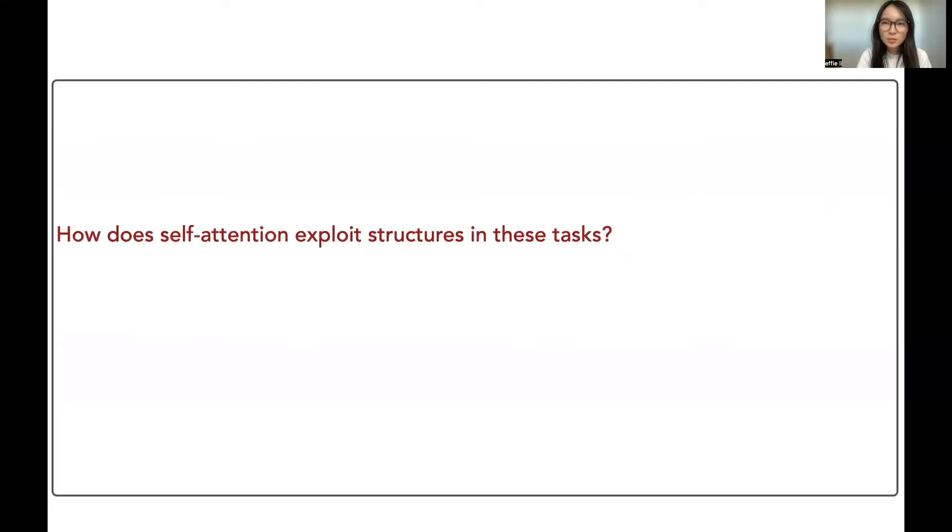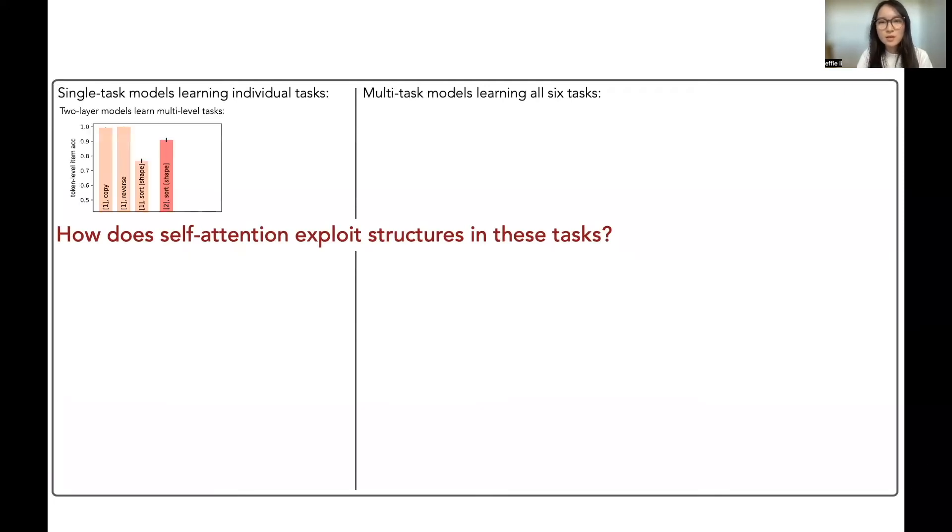To explore how self-attention exploits structures in our tasks, we study two settings. In single-task learning, we trained models on individual tasks. While single-layer models can learn the copy and reverse tasks, they fail at the sort task, but two-layer single-headed models can solve both the sort and group tasks.